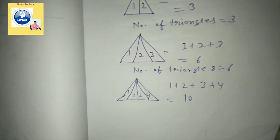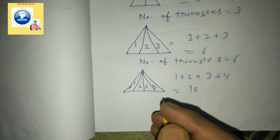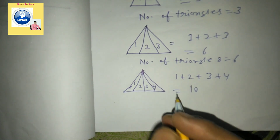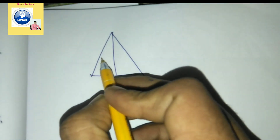In this way you can calculate triangles very easily. Let's see more examples. This next trick is a little bit different because the triangles are in a different shape.